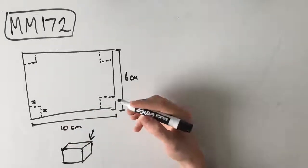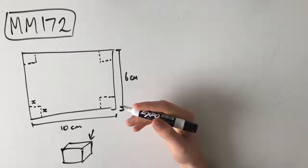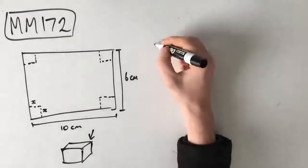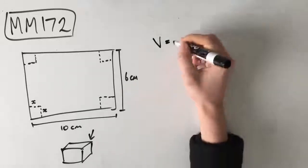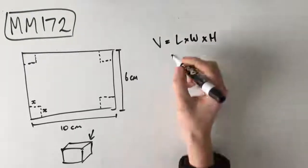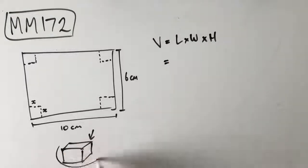Alright, so if we're trying to find the maximum volume, that means we need to find a generic formula for the volume first in order to be able to make it a maximum, right? So, we know that this is a rectangular box, which means that the volume is going to be equal to the length times the width times the height. Of this box, of the turned up box.